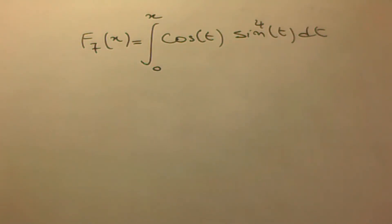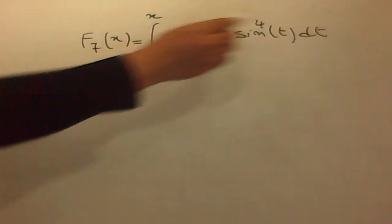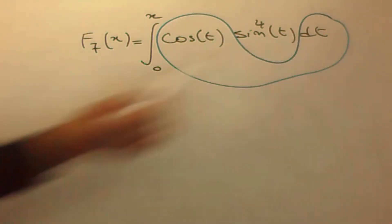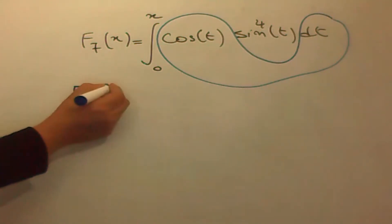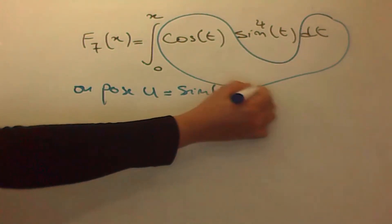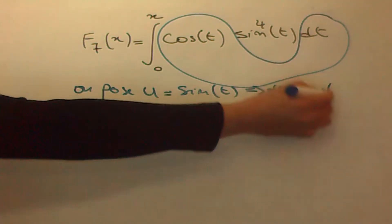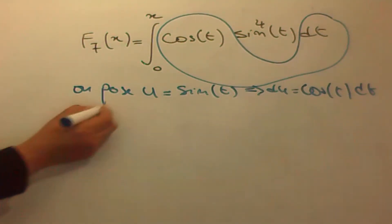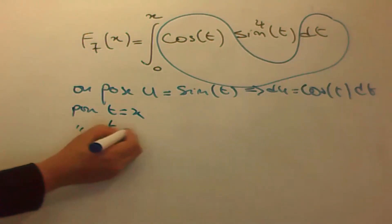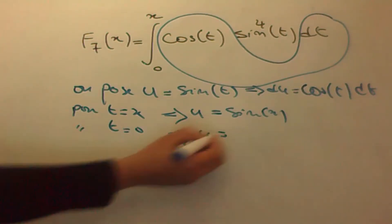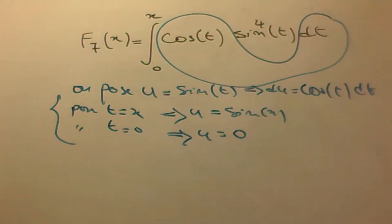Ce sera un peu compliqué avec le cosinus car on a sinus puissance 4. De préférence on utilise u égal à sinus de t, parce que lorsqu'on dérive la fonction sinus, on tombe sur cosinus de t dt. Donc on pose u égal à sinus de t, et du égal à cosinus de t dt. Pour les bornes : t égal x donne u égal sinus x, et t égal 0 donne u égal sinus 0, c'est 0. On va appliquer ce changement de variable.